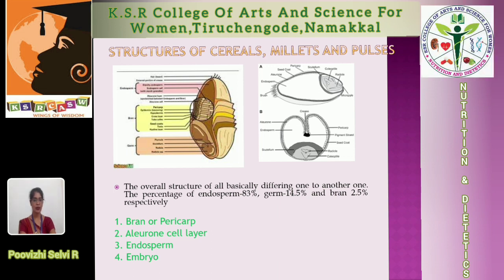All the above grains have the same structure. It has four important parts: endosperm having 83%, germ having 14.5%, and bran having 2.5%. The four parts are: bran, cellulose, endosperm, and embryo.